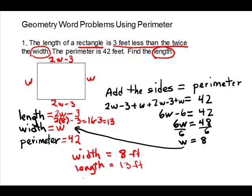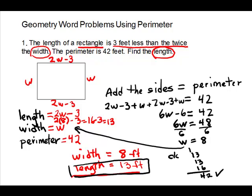The length, 13, is the answer to the question. Let's do a quick check: we have 2 sides that are 13 and 2 sides that are 8. 13 plus 13 is 26, and 8 plus 8 is 16, giving us 42 — which is our perimeter. So our length is 13 feet.